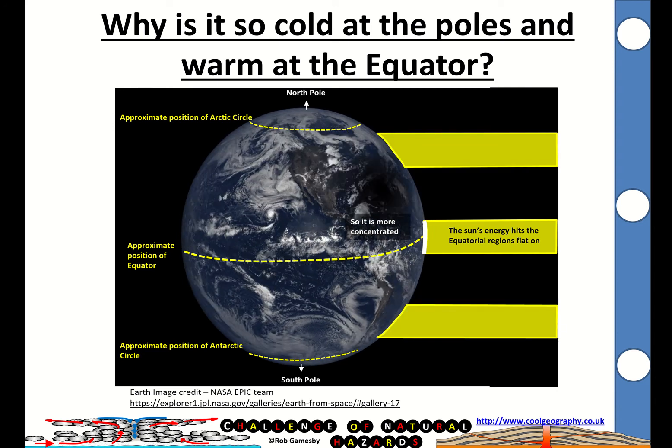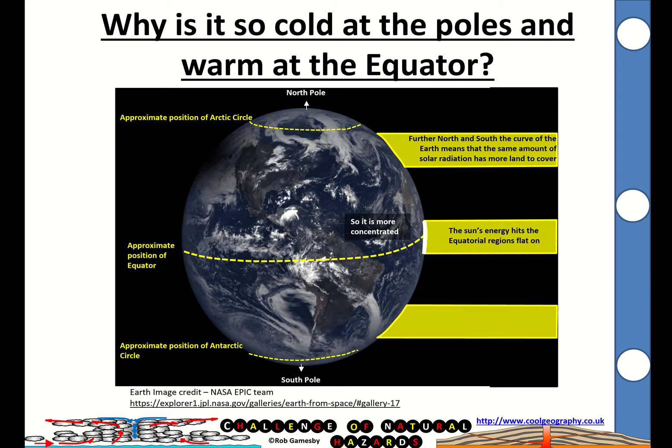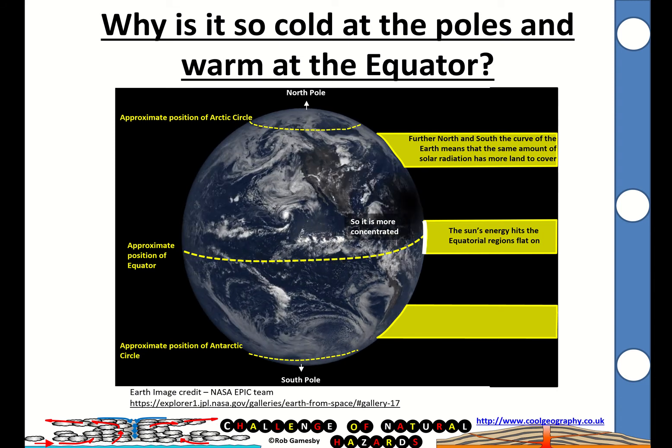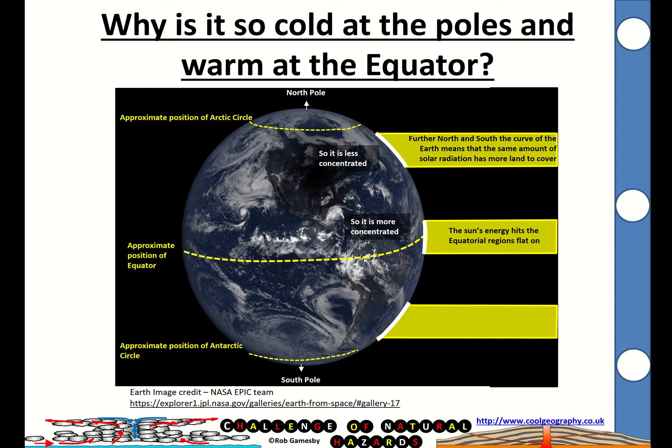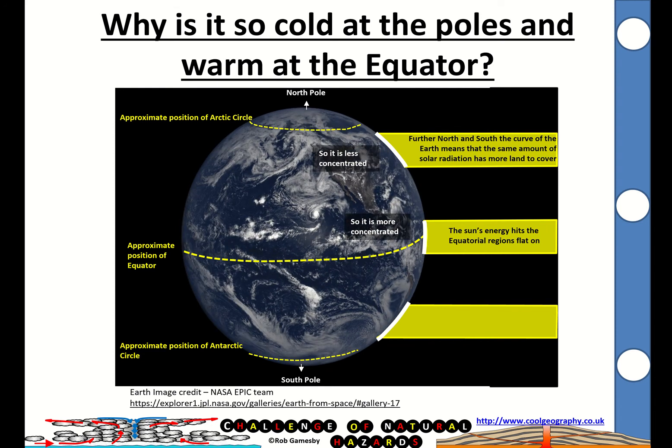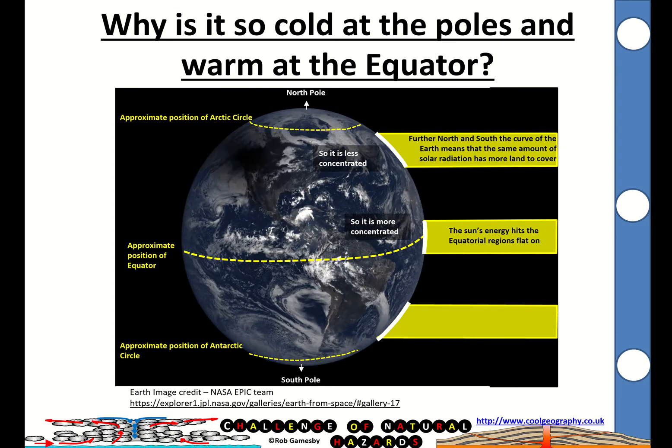The further north we go and south we go, as you can see there, the curve of the Earth means that the same amount of solar radiation has more land to cover. That means that the energy is less concentrated.